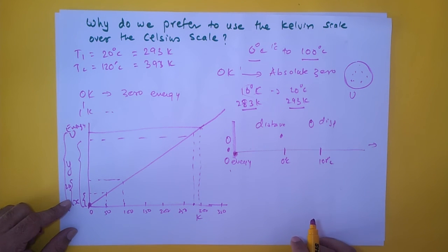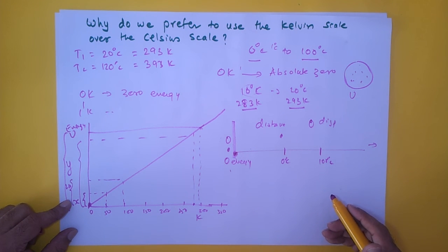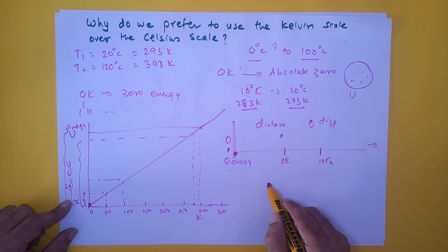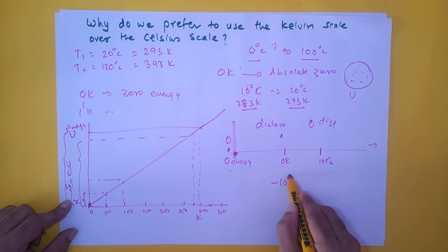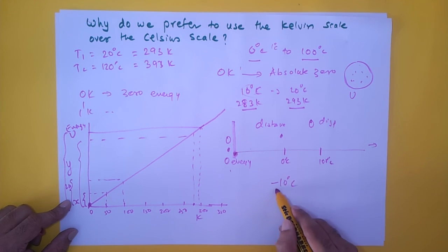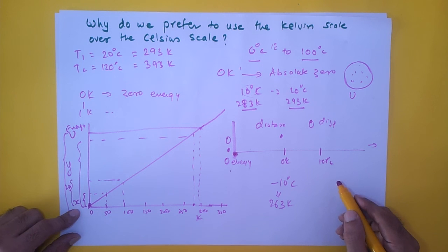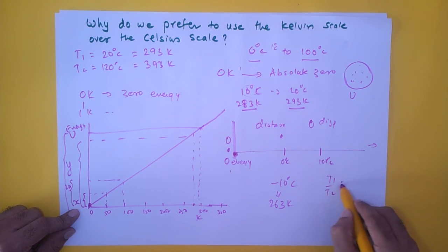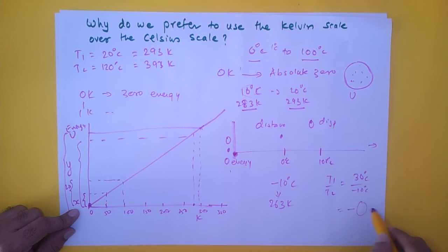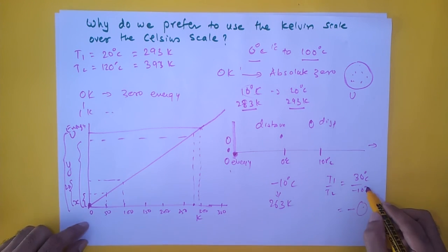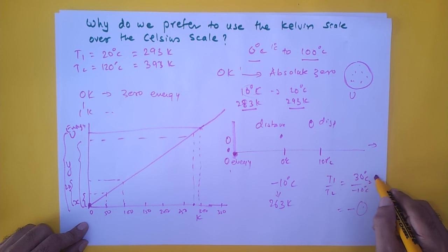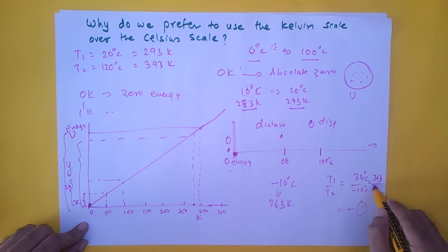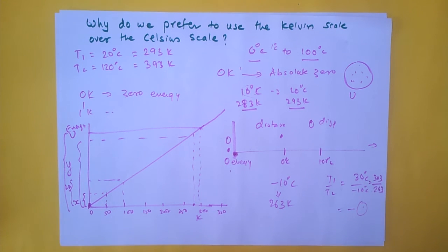A final advantage of the Kelvin scale is that it avoids negative numbers. On the Celsius scale, a temperature can be −10°C, but converting to Kelvin gives 263 K — always a positive number. This is especially helpful when you need to use a ratio of temperatures such as T1/T2. If T1 = 30°C and T2 = −10°C, you get a negative ratio on the Celsius scale. Converting to Kelvin gives 303 K and 263 K, yielding a valid positive ratio.